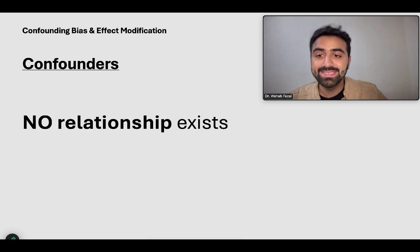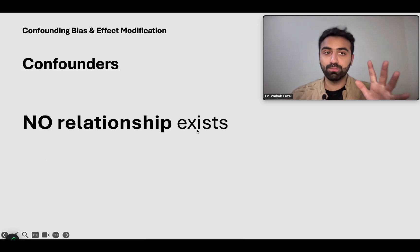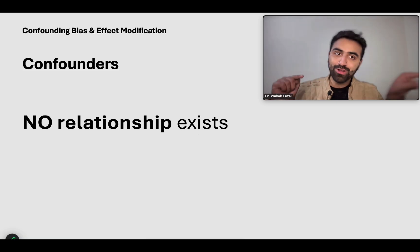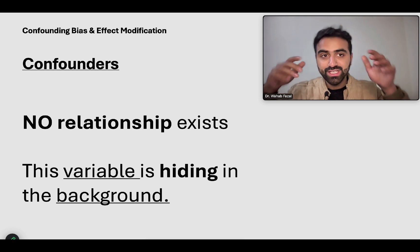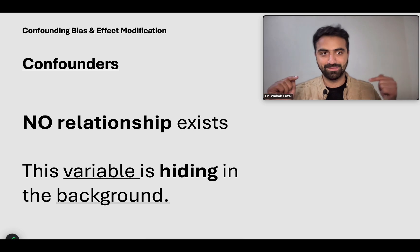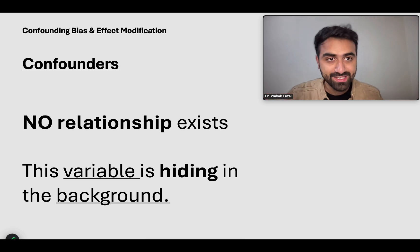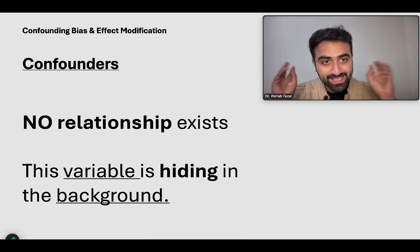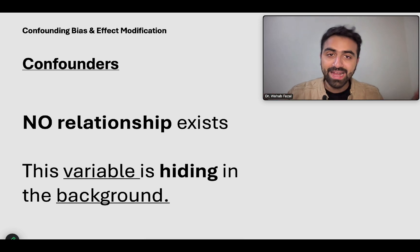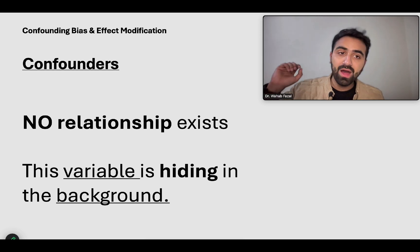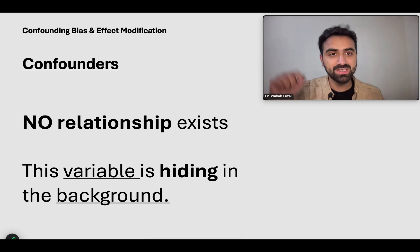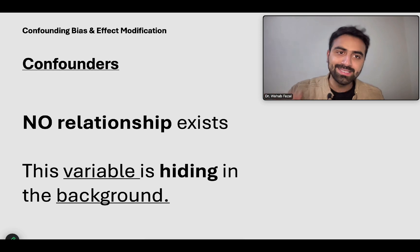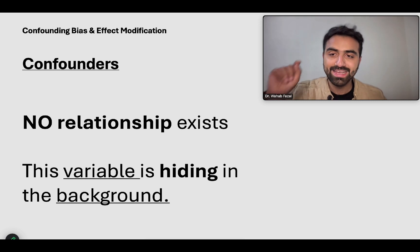So how do you explain a confounder? There is no true relationship between the exposure and the outcome. We know that alcohol use is not causing the lung cancer. It is this third variable hiding in the background which is causing this false association to develop in our minds. Confounders are very bad for research. For example, you might associate your dog loving a specific park, but then find out that park has dog food hidden in the grass — that hidden factor is the confounder.